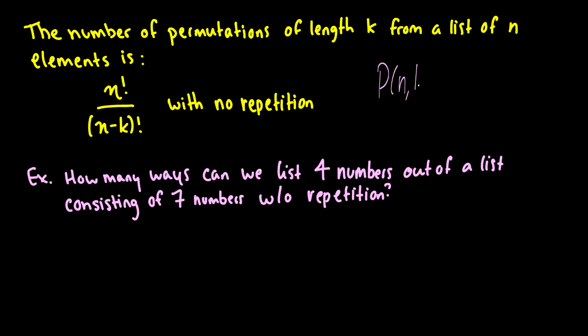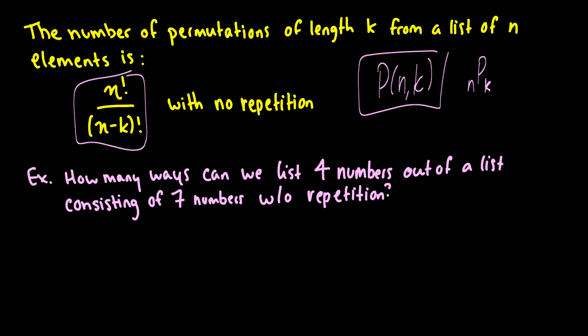This is often written as P(n, k) or sometimes n P k, but that notation is very rarely used — I think I only saw it in high school. What we're saying is if you have n items and you have to order a specific amount of those items that isn't the full length, then you get this formula.